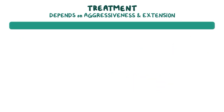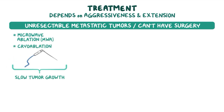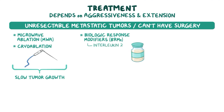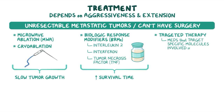For clients with unresectable metastatic tumors, as well as those who can't have surgery, treatment can involve microwave ablation (MWA) and cryoablation, which can slow tumor growth. Biologic response modifiers (BRMs), including interleukin-2, interferon, and tumor necrosis factor (TNF), have also been shown to increase survival time. Finally, targeted therapy — medications that target specific molecules involved in the growth of cancer cells — has recently also been used to treat renal cancer.